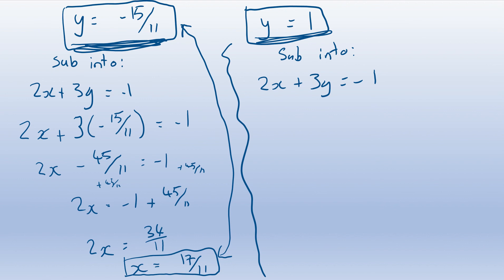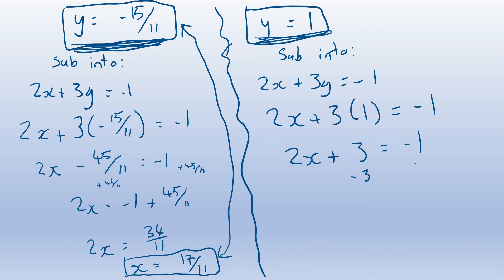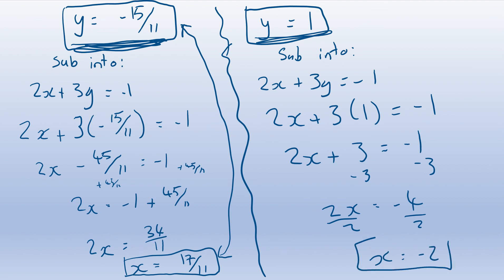For y equals 1: 2x plus 3 times 1 equals minus 1; 2x plus 3 equals minus 1; 2x equals minus 4; so x equals minus 2. Our two solution pairs are: x equals 17/11 with y equals minus 15/11, and x equals minus 2 with y equals 1.